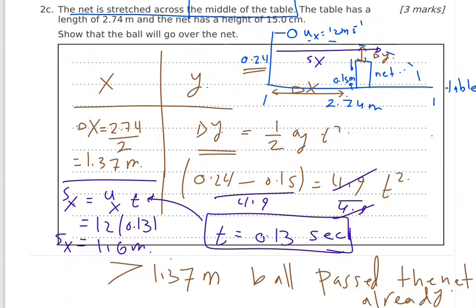Since sx = 1.6 m is greater than Δx = 1.37 m, the ball has already passed over the net. That was the solution to question number three of your exam.